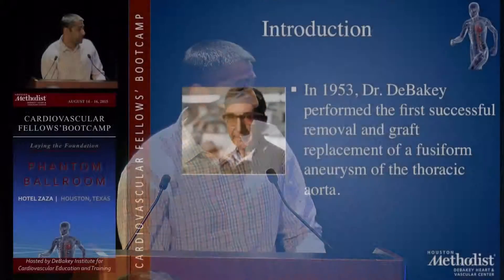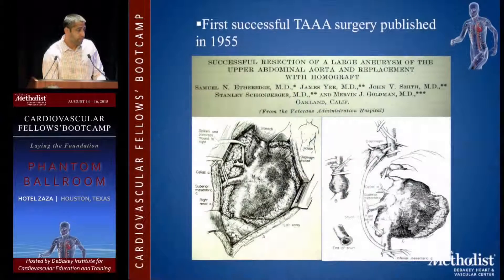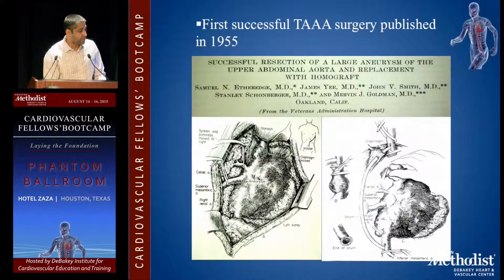This presentation covers diagnosis and imaging of thoracoabdominal aneurysms and abdominal aortic aneurysms. In 1953, DeBakey performed the first successful removal and graft replacement of a fusiform aneurysm of the thoracic aorta, first published in 1955.